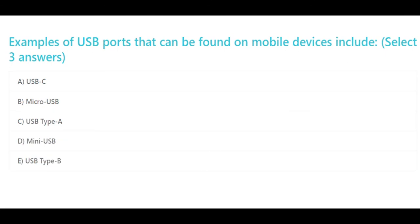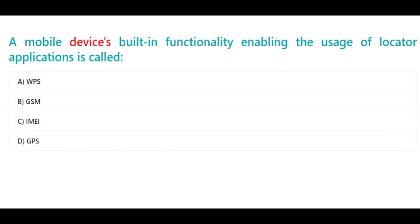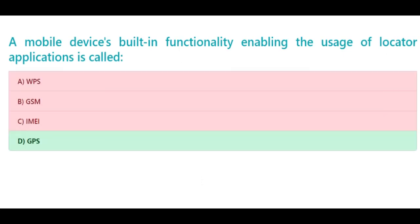A mobile device's built-in functionality enabling the usage of locator applications is called: A. WPS, B. GSM, C. IMEI, D. GPS. The correct answer is D. GPS.